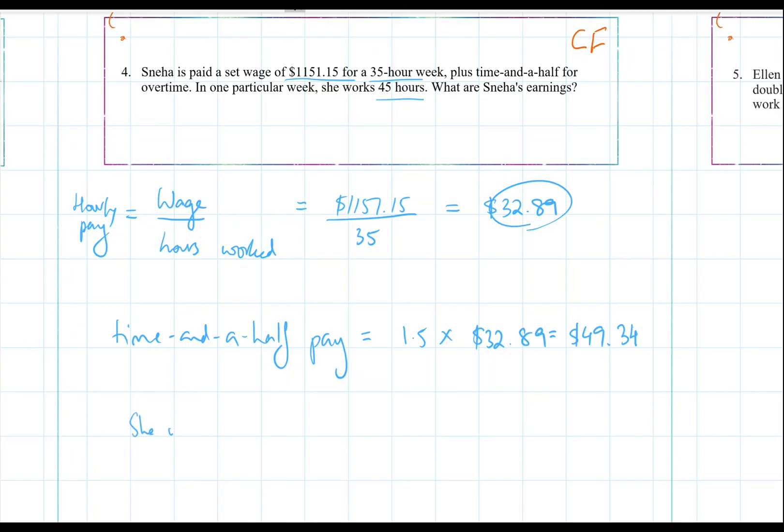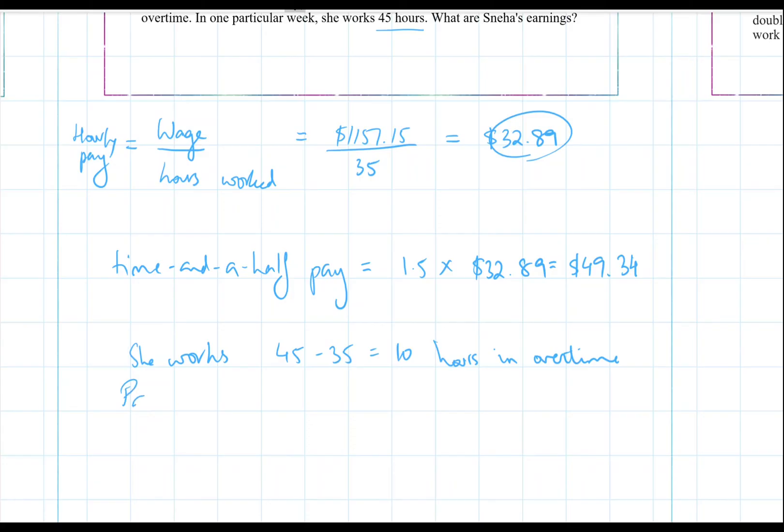So she works 45 minus 35, which is 10 hours in overtime. So her pay is going to be hours worked, which is 10 times her pay, which is $49.34. And that is $493.40.